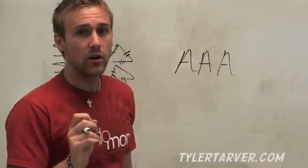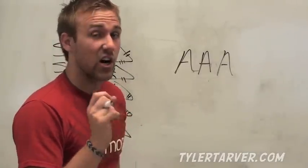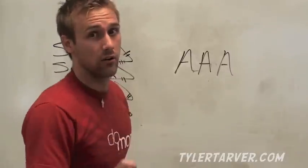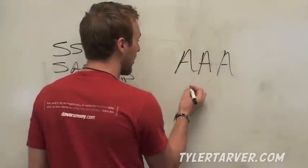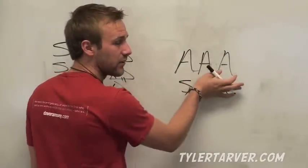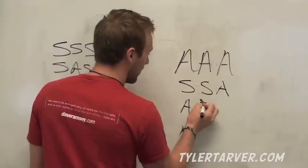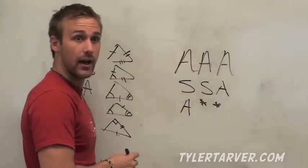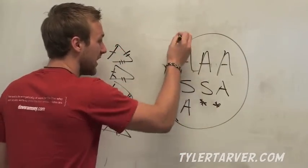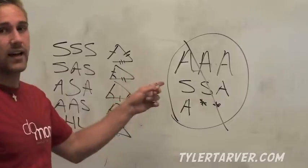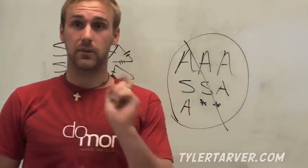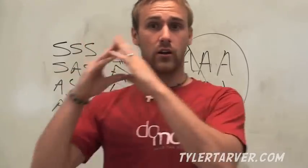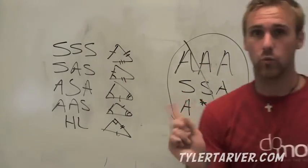The other one that doesn't work is side-side-angle — and it actually spells something inappropriate, which is why it's easy to remember to avoid it. So those two — angle-angle-angle and side-side-angle — will not work to prove triangle congruence. Don't try to use them.